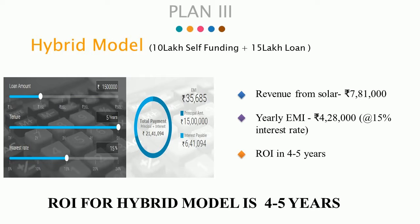Plan 3: Hybrid Model. This plan is a combination of Plan 1 and Plan 2. The owner invests 10 to 15 lakhs from their own sources and the balance amount is procured through a business loan. For example in a 50kW setup, 10 lakhs will be funded by the owner and the balance 15 lakhs through loan. The ROI will be 4 to 5 years depending on loan tenure, and the EMI will also be less compared to Plan 2.